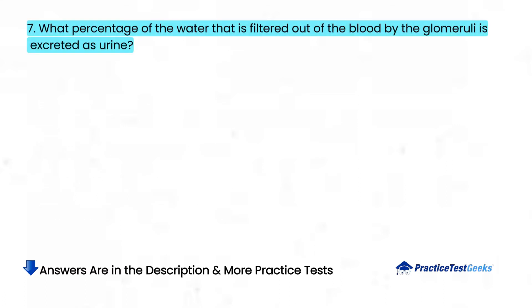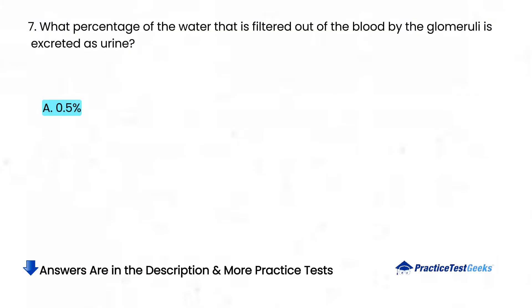What percentage of the water that is filtered out of the blood by the glomerulus is excreted as urine? A. 0.5%. B. 1%. C. 10%. D. 99%.